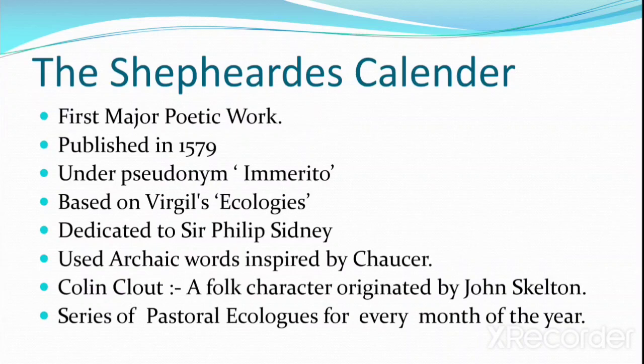The Shepheardes Calender is an important work by Edmund Spenser. It is the first major poetic work of Spenser, published in 1579. It was written under the pseudonym of Immerito — this is very important, please note. The Shepheardes Calender is written under the pseudonym of Immerito, and it is based on Virgil's Eclogues.